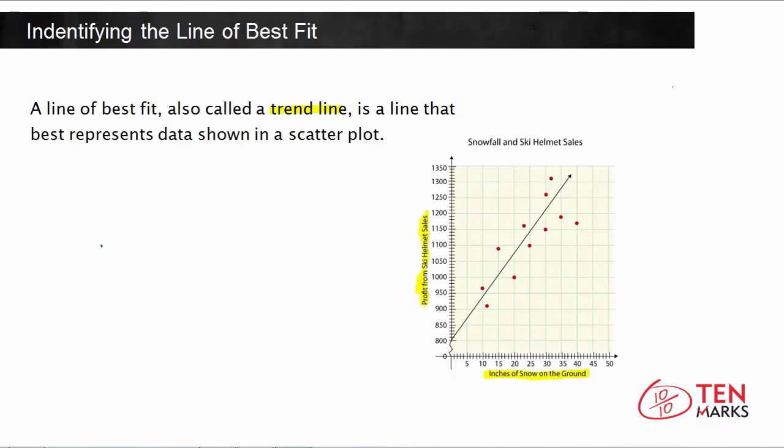As you can see, there's already a line drawn on the scatter plot, and this line was drawn by making sure that roughly the same number of points fall above and below the line. This is our trend line, and what we want to do is find the equation that represents this line, and therefore find the equation that best represents the relationship between these two variables or these two data points.